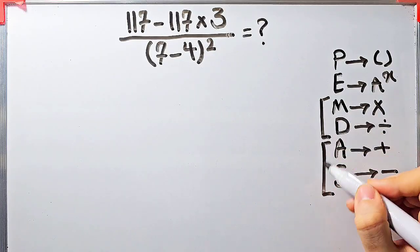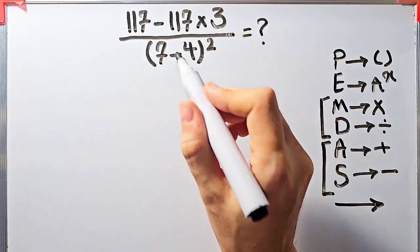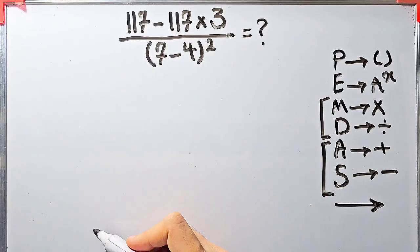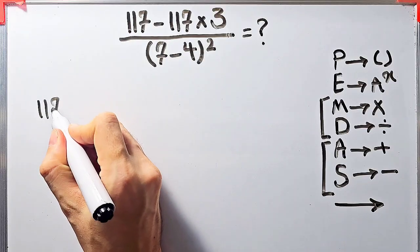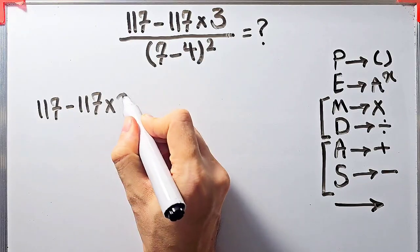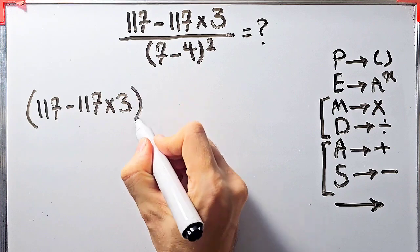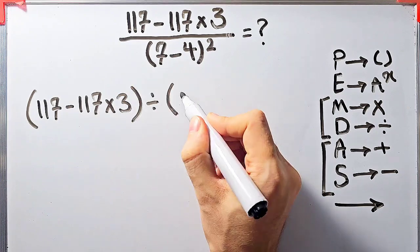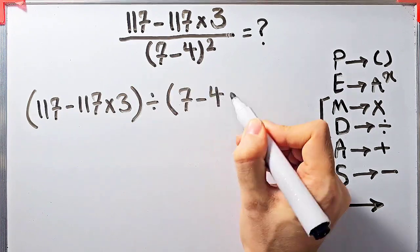When we have both in an expression, we start from the left and simplify the question. Let's simplify and solve this question step by step together. We have 117 minus 117 times 3, then divided by open parentheses 7 minus 4 closed parentheses, then all of them to the power of 2.